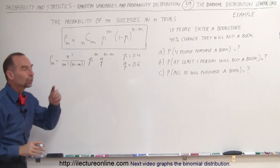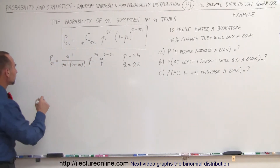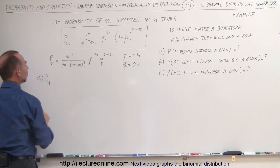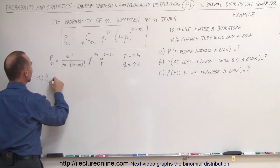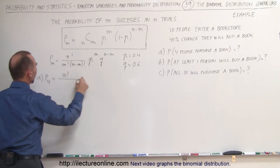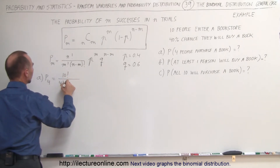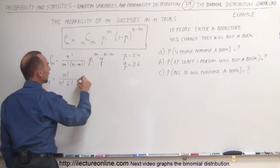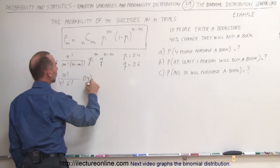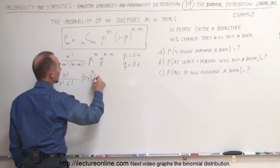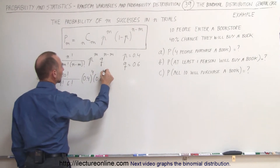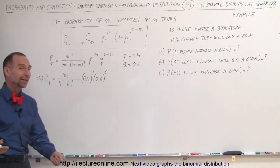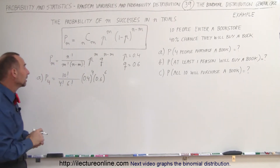Let's start with Part A: the probability that 4 will purchase a book. That equals 10 factorial divided by 4 factorial times 6 factorial (because 10 minus 4 is 6), times 0.4 raised to the 4th power, times 0.6 raised to the 6th power. You can see that you cannot combine them because they're different probabilities.